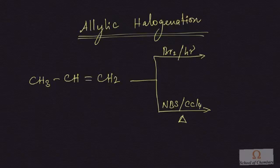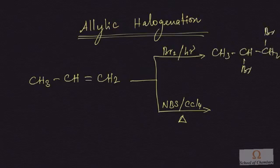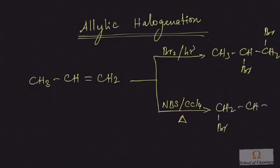When bromination is done with an alkene, bromine is generally added across the double bond in the presence of sunlight, giving a product where bromine is added via anti addition. However, if you use NBS, because of its high selectivity, NBS will substitute a bromine atom at the allylic position, leaving the double bond untouched.